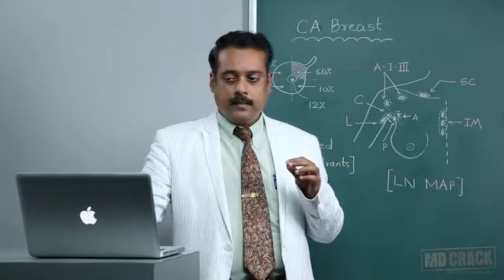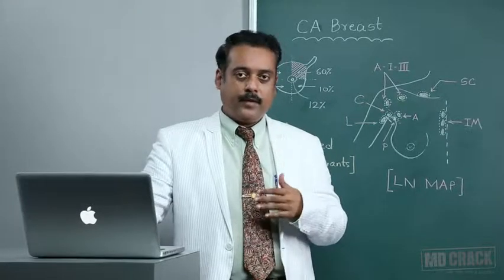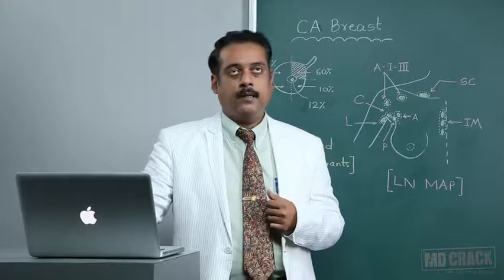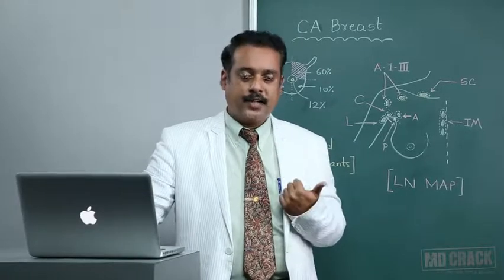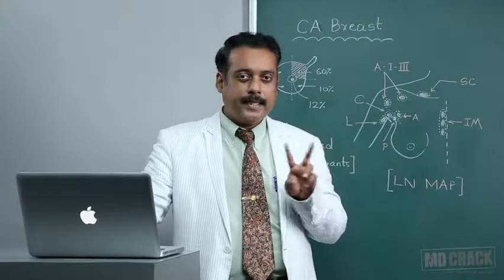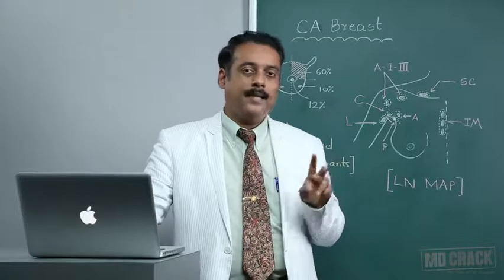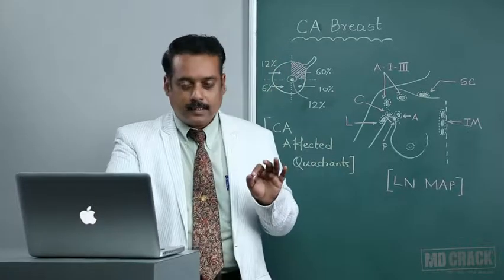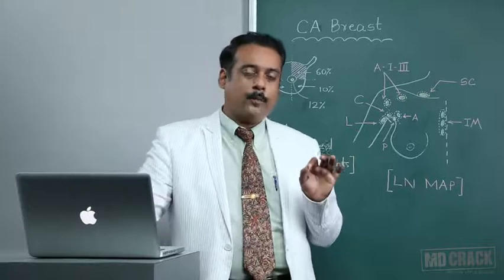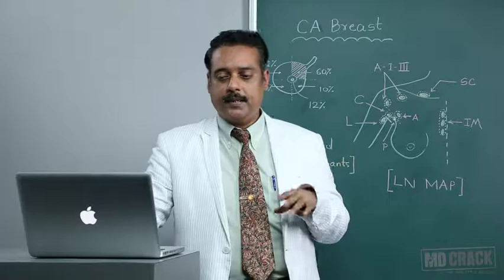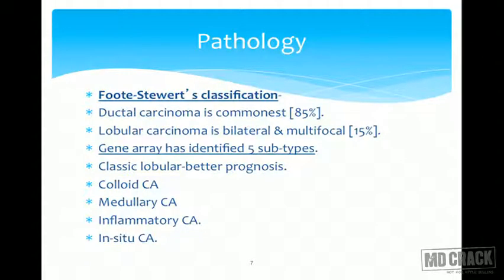Moving on to pathology — the breast has two main entities: ductal affection and affection of the lobules. So the two main variants are ductal cell carcinoma and lobular carcinoma. Ductal cell carcinoma is the commonest, comprising 85% of CA breast cases, while the remaining 15% is lobular carcinoma. An important feature of lobular carcinoma is that it can be bilateral and multifocal, compared to ductal carcinoma which is typically unilateral and less commonly multifocal.